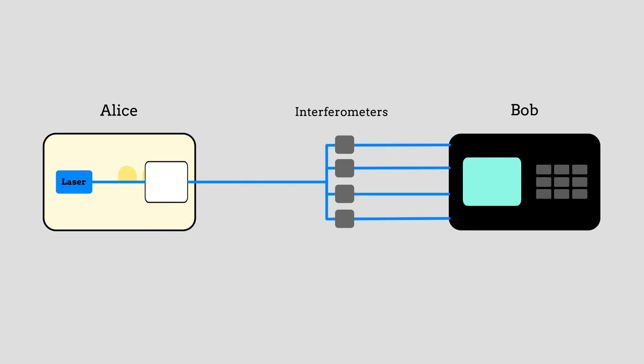Instead of immediately reading out the information, each of the split trains goes to an interferometer that introduces a different delay, specifically a unique multiplier of the pulse-to-pulse interval.